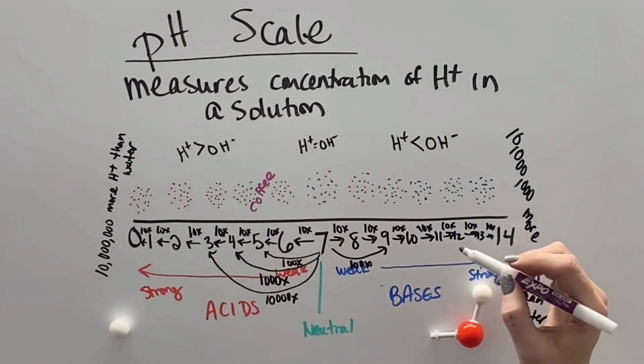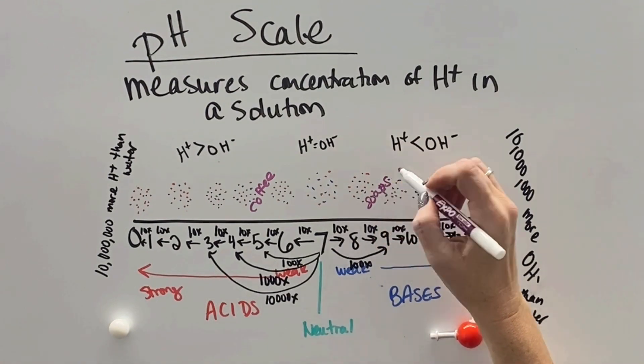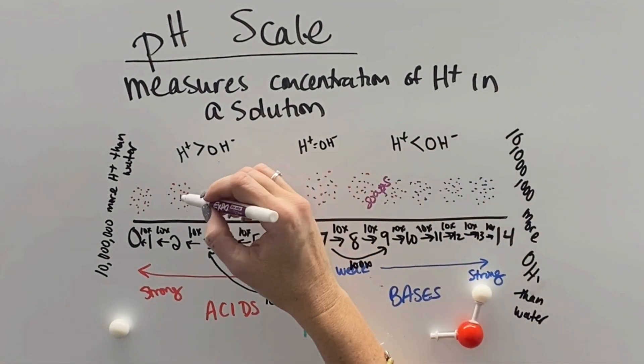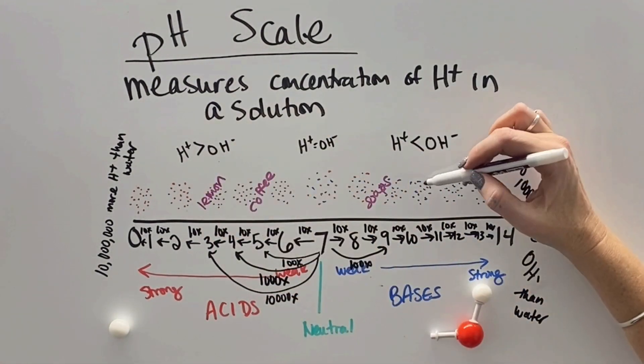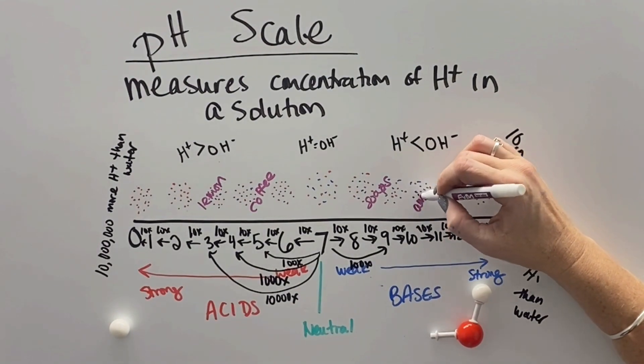So what are some substances? Coffee has a pH of like 4 or 5. Soap has a pH of like 8, 9. Lemon is like around a 3. And ammonia is somewhere at 10, 11.